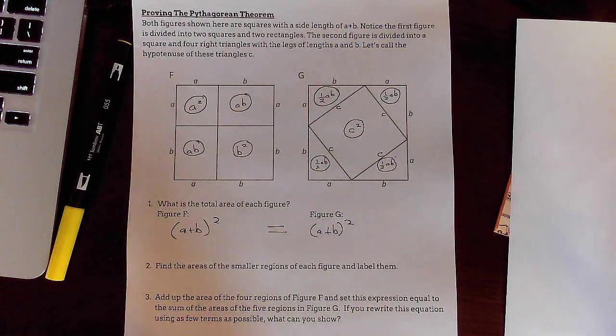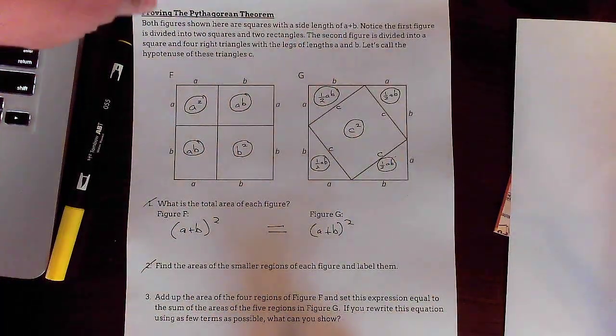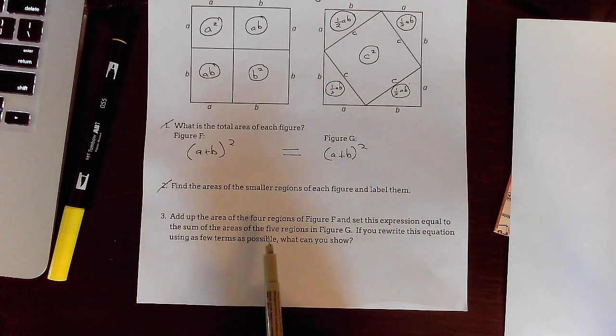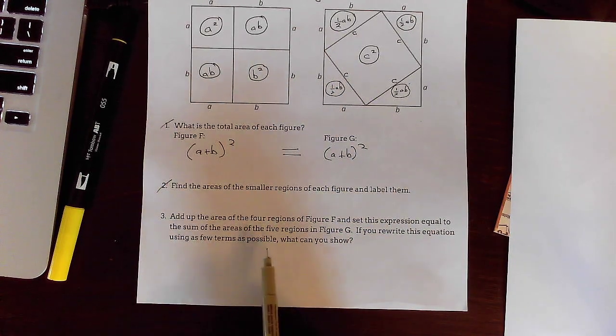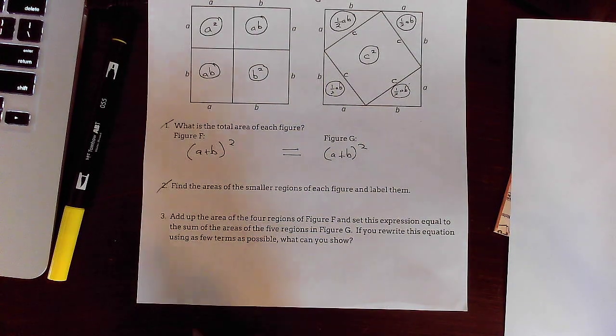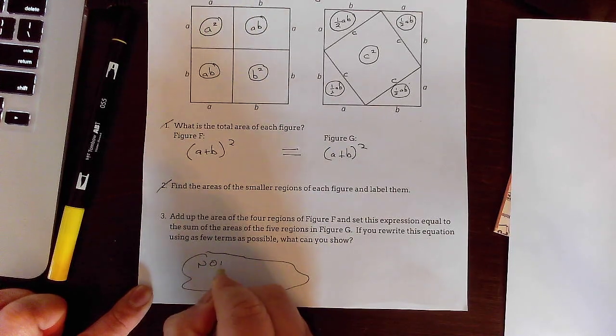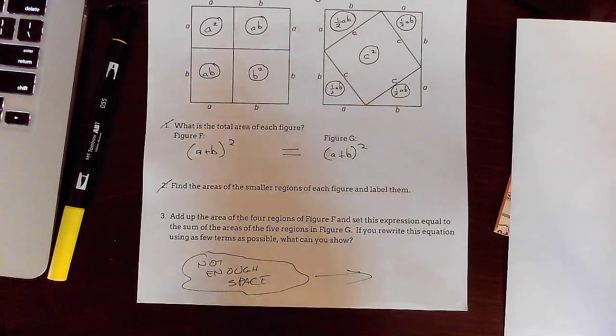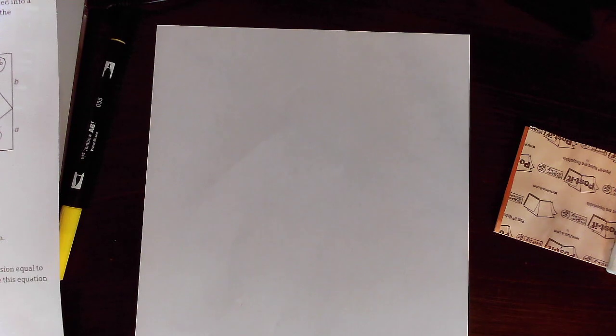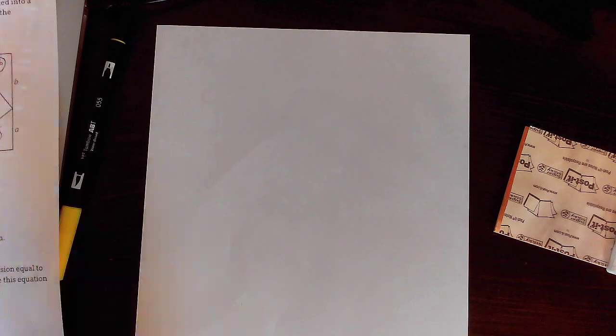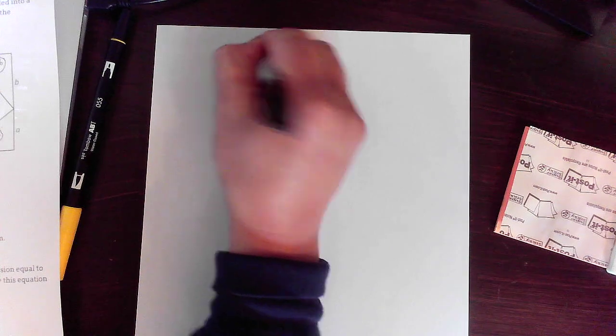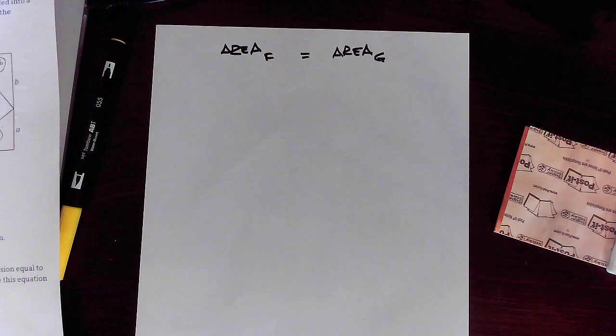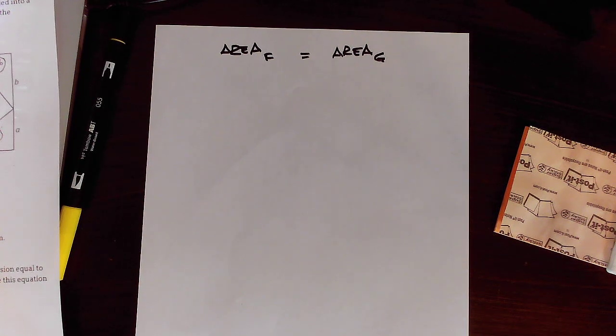Okay. That is going to set us up nicely for number three. It says here, add up the area of the four regions of figure F and set this expression equal to the sum of the areas of the five regions in figure G. If you rewrite this equation using as few terms as possible, what can you show? Oh my goodness. This right here is not enough space. Sorry. We're going to go to some scratch paper over here. And I'll use the fat marker just because I can. I know one thing from number one. Area of F is equal to the area of G. So we are going to keep that knowledge in our pockets for now.